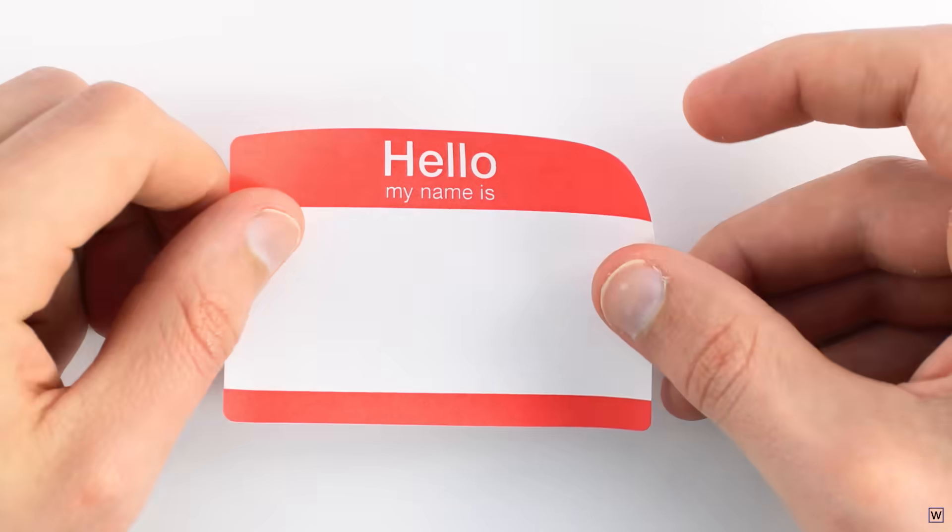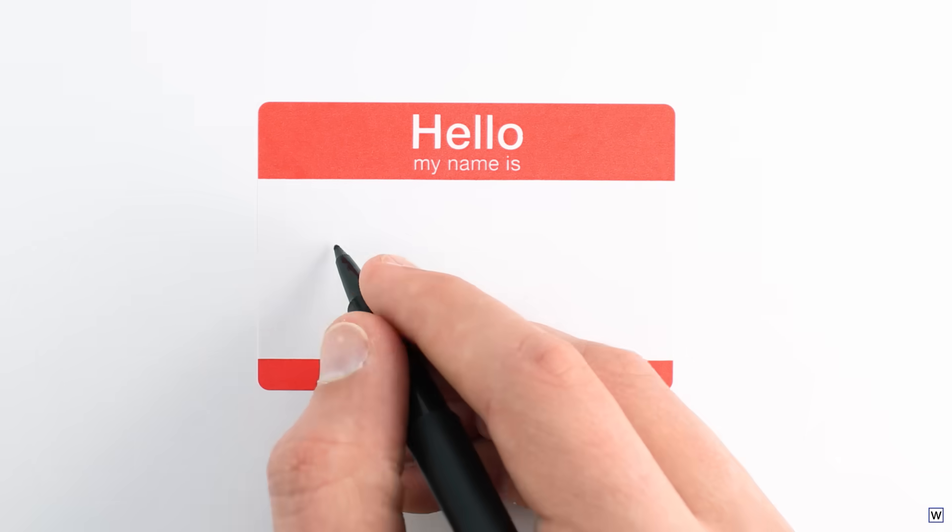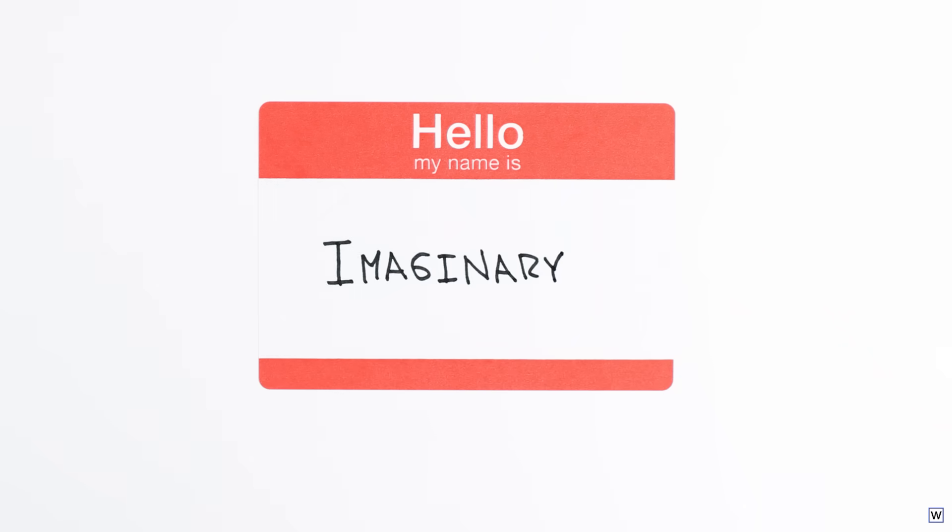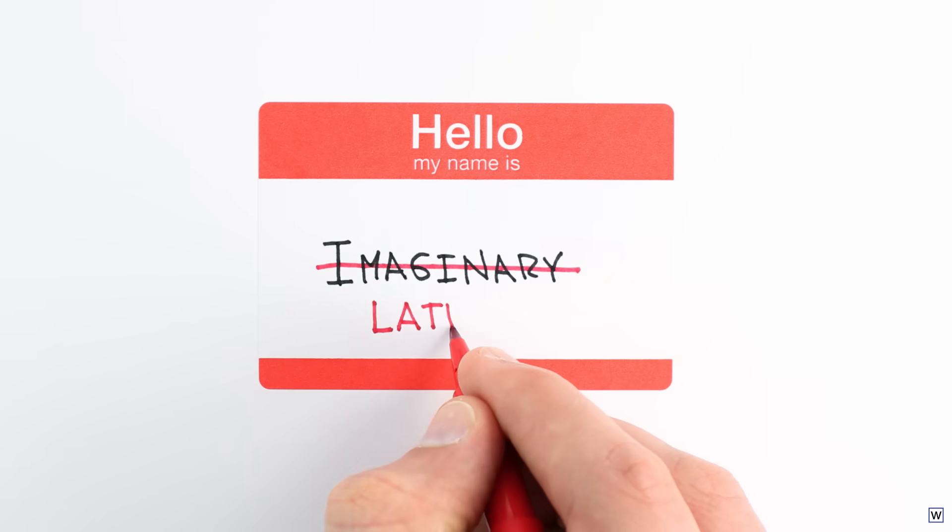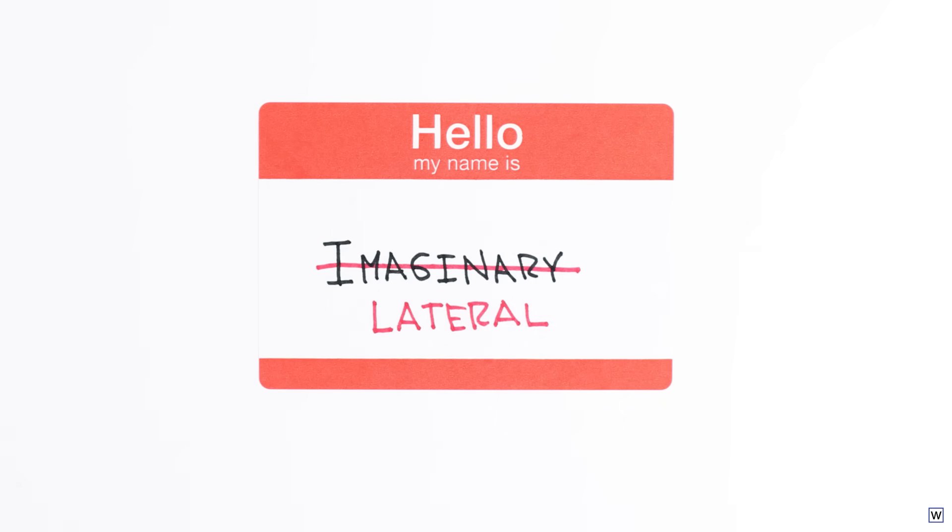So yes, our missing dimension is comprised of numbers that have been given the ridiculous name imaginary. Gauss proposed these numbers should instead be given the name lateral. So from here on, let's let lateral mean imaginary.